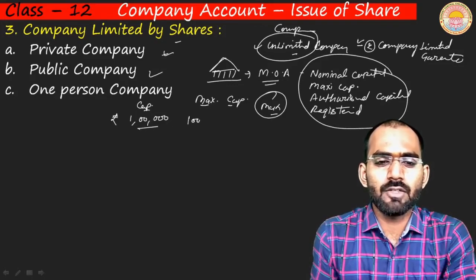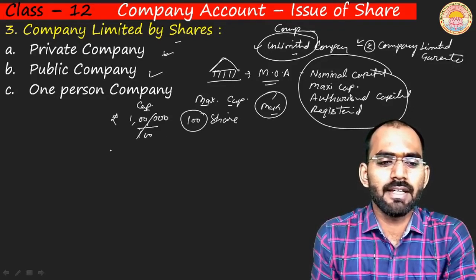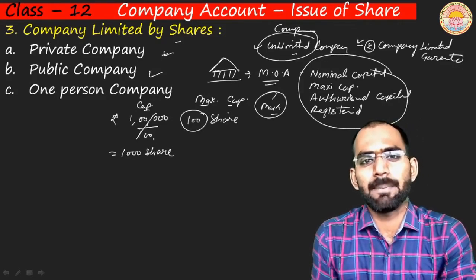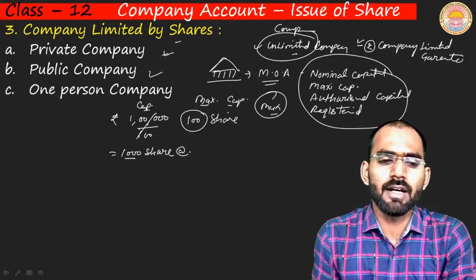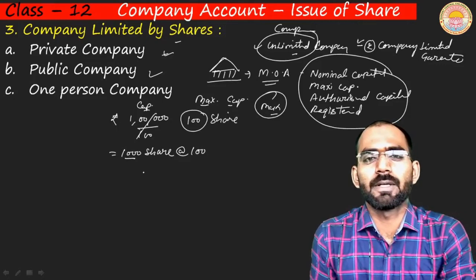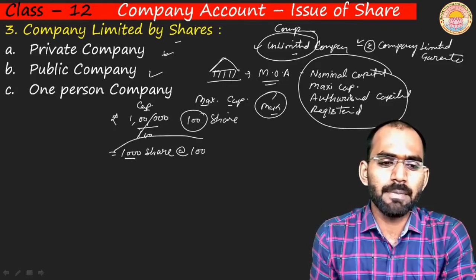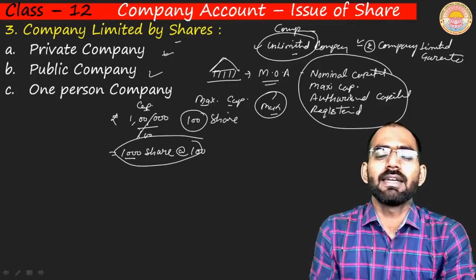For example, one share is priced at ₹100. So the company will divide its capital into shares — say 1,000 shares of ₹100 each. The company issues a fixed number of shares, meaning the capital is divided into shares of that nominal value.